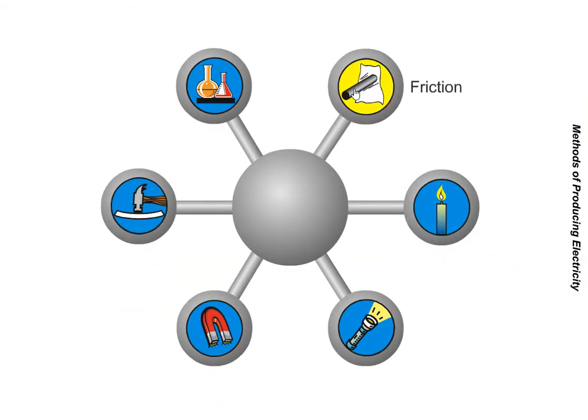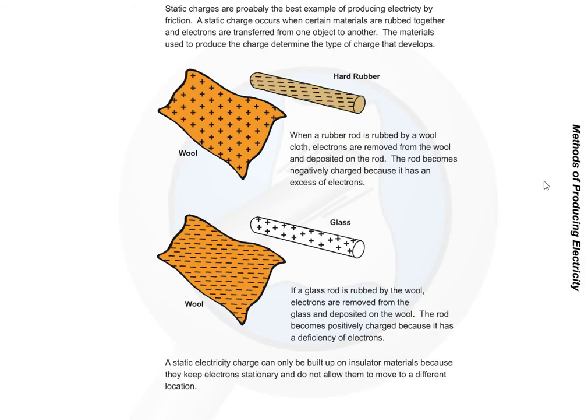Friction. Static charges are probably the best example of producing electricity by friction. A static charge occurs when certain materials are rubbed together and electrons are transferred from one object to another. The materials used to produce the charge determine the type of charge that develops. When a rubber rod is rubbed by a wool cloth, electrons are removed from the wool and deposited on the rod. The rod becomes negatively charged because it has an excess of electrons.